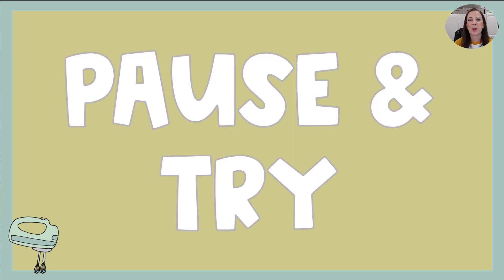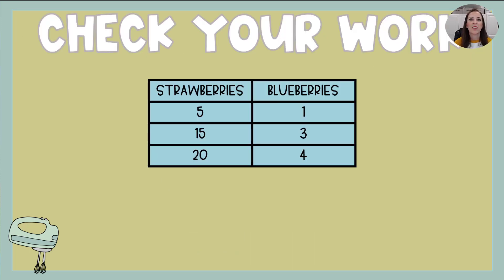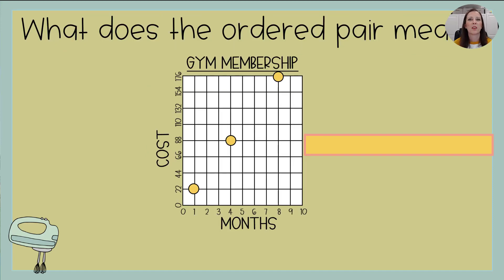All right. Now you're going to pause and try one of those on your own and then come back and check your work. All right. Hopefully, these are the ratios of strawberries and blueberries that you came up with on our fruit baskets. Five to one, 15 to three, and 20 to four.